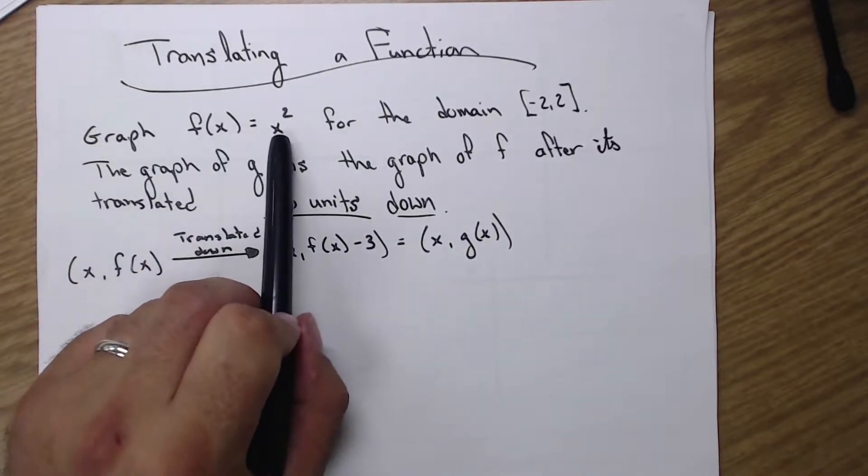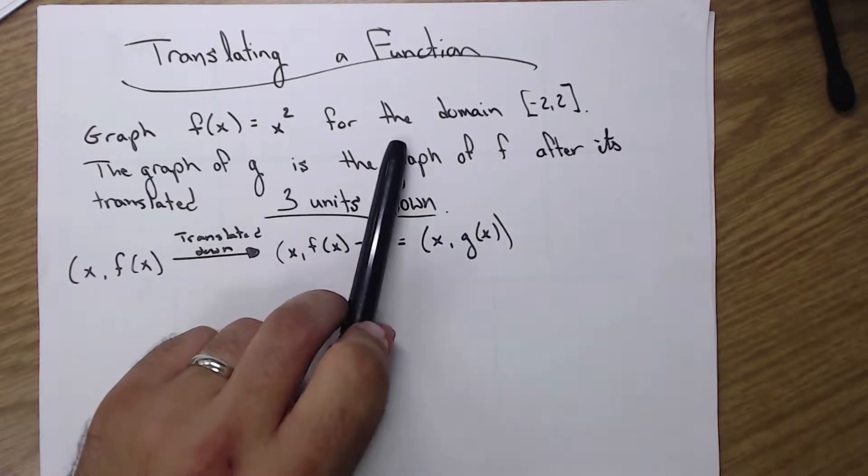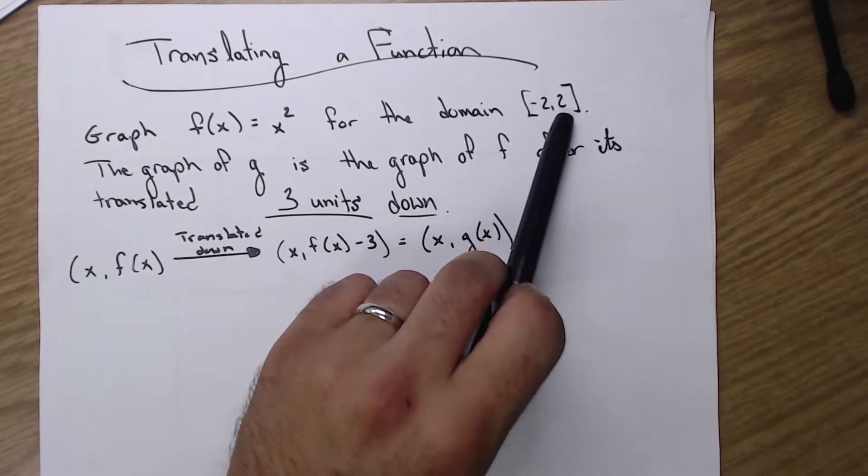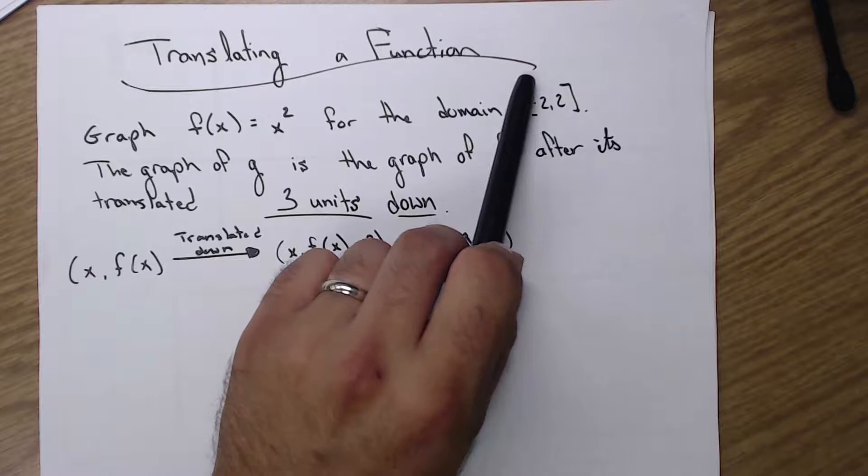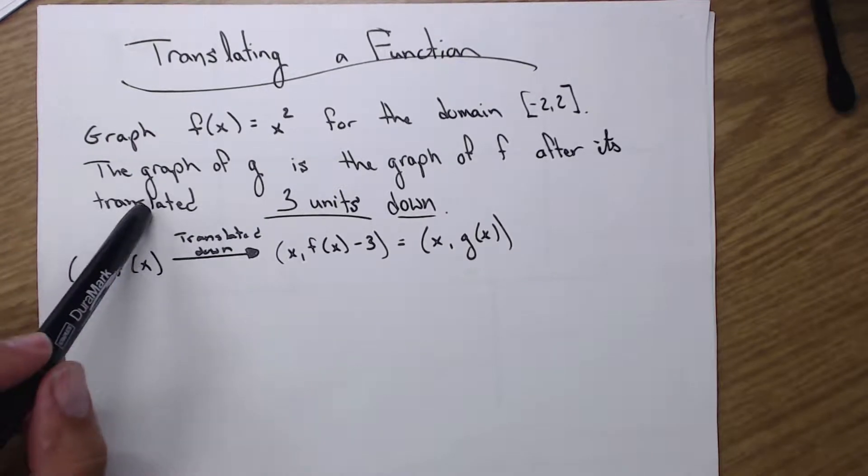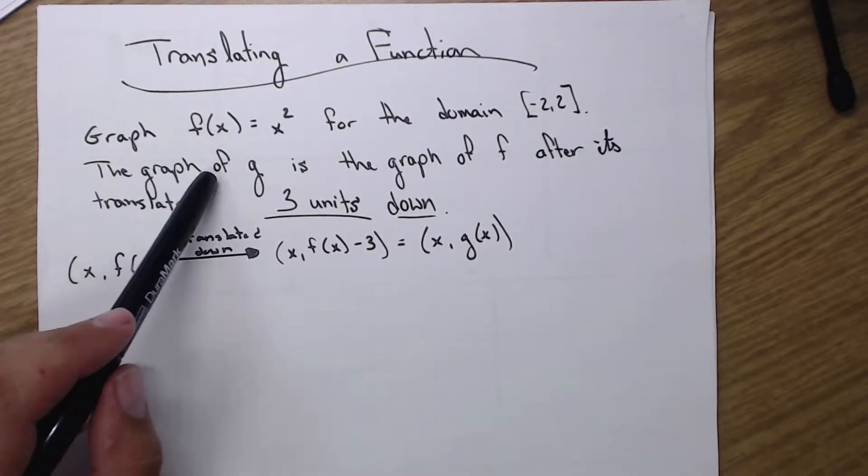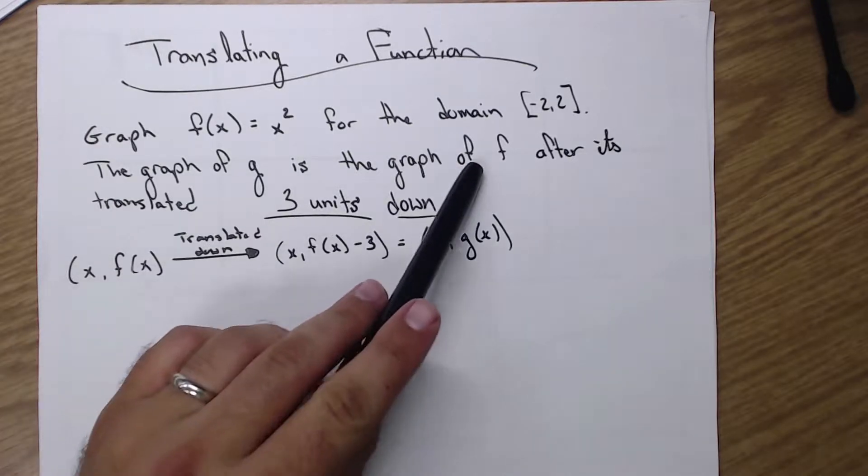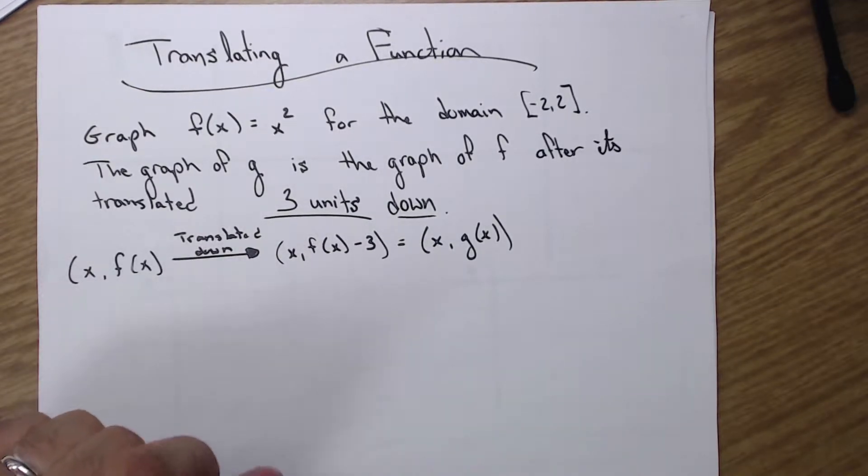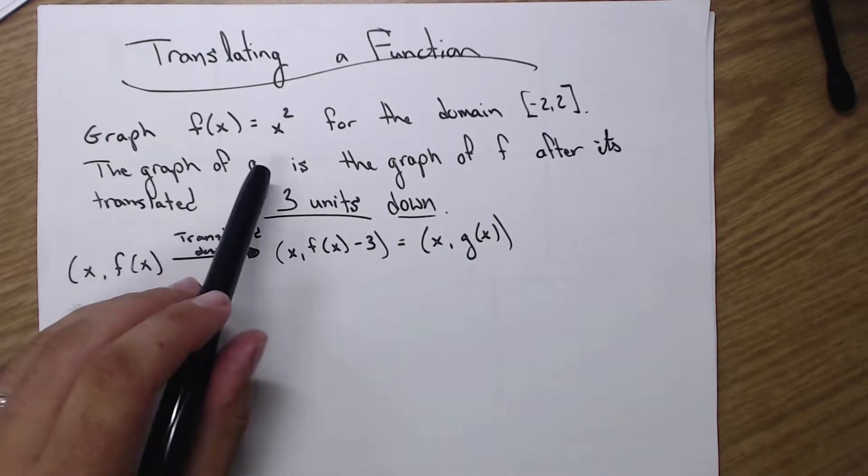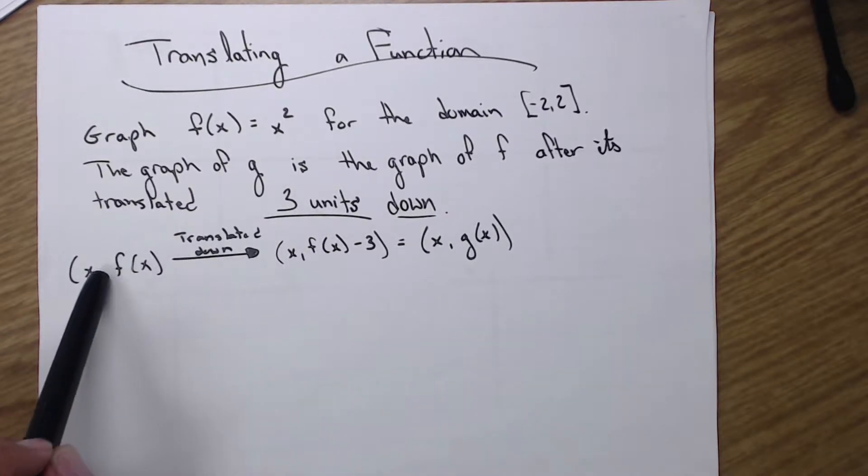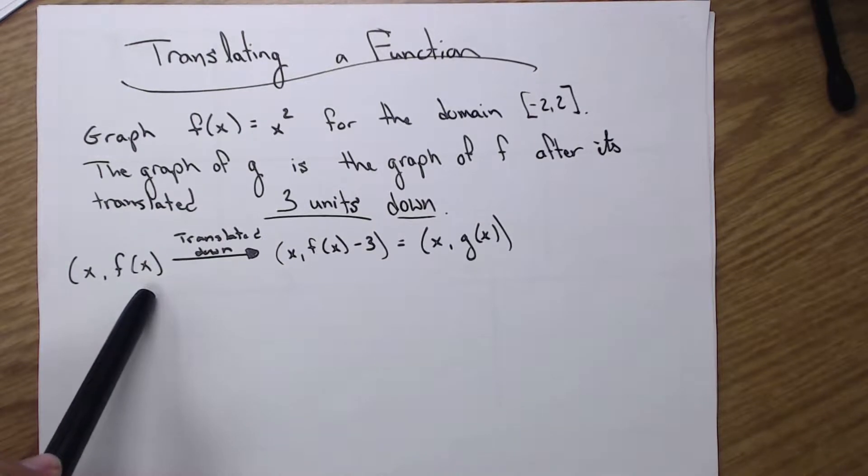Alright, so we're starting off with the graph f of x equals x squared. Hopefully you remember that being a parabola. And we're going to look for the domain, or just for this particular example, we're looking at the group of numbers between negative 2 and 2. And since it's domain, those are x values, and solid brackets here. So that means we are including those negative 2s and 2.